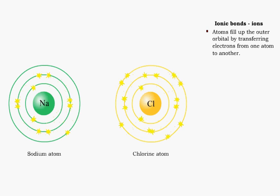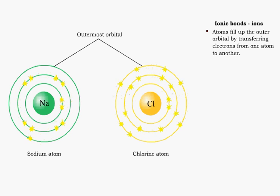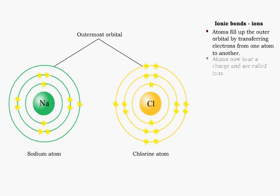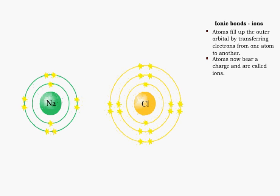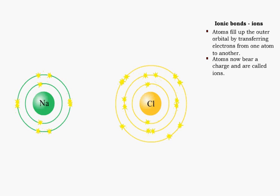Ionic bonds are formed when electrons are transferred from one atom to another. For example, one electron can move from the sodium atom to the chlorine atom. After the electron is transferred,